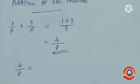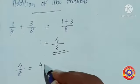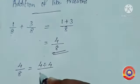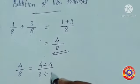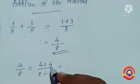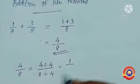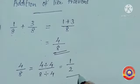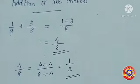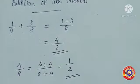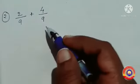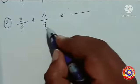Now we have to find the lowest form of 4 by 8. 4 and 8 are divisible by 4. Then 4 divided by 4 is equal to 1, and 8 divided by 4 is equal to 2. Then 1 by 8 plus 3 by 8 is equal to 1 by 2.